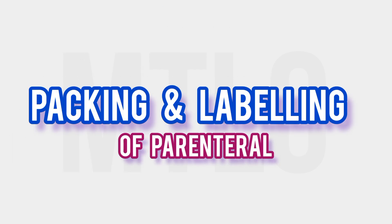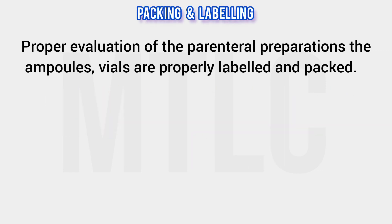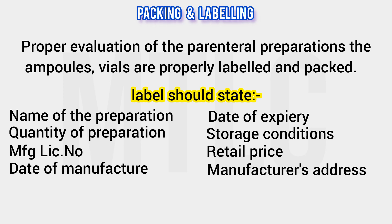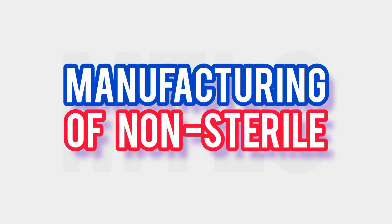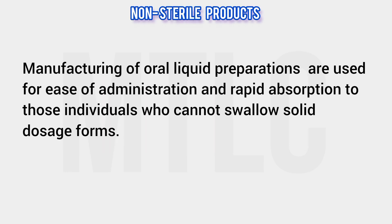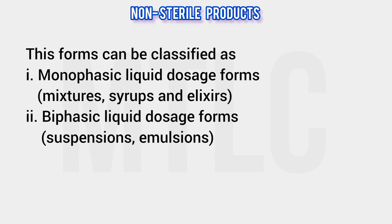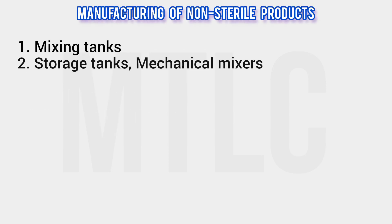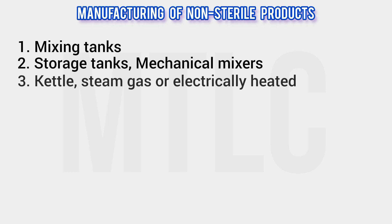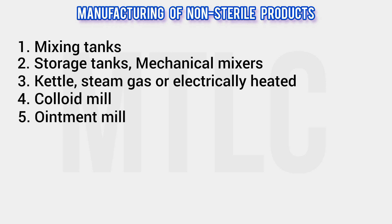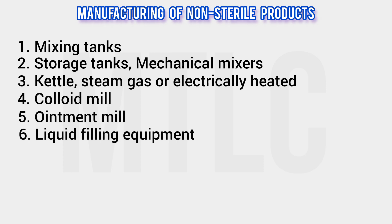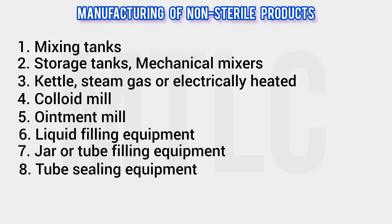Quality control testing, then packing and labeling of parenterals. We evaluate the parenteral so that the label is proper, and check for leakage. Non-sterile manufacturing units handle normal oral liquids, such as mixtures, syrups, elixirs, suspensions, and emulsions. Equipment used includes mixing units, storage tanks, mechanical mixers, kettles — steam, gas, or electricity powered — colloidal mills, and liquid fill jars and tubes with sealing equipment.